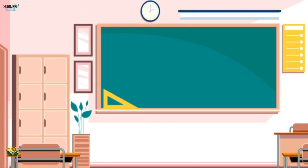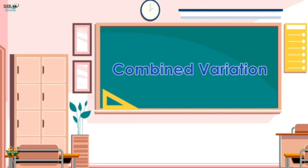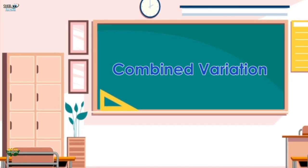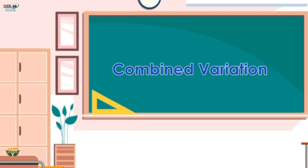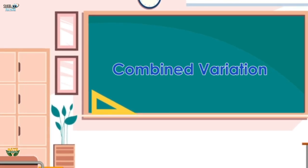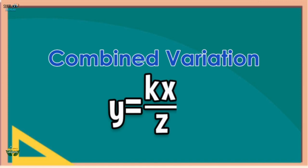Finally, the fourth type is combined variation. It is a variation where a quantity varies directly with one or more quantities and inversely with a third quantity or more. It can be written as y = kx/z, where k is the constant of variation. This is read as: y varies directly as x and inversely as z.